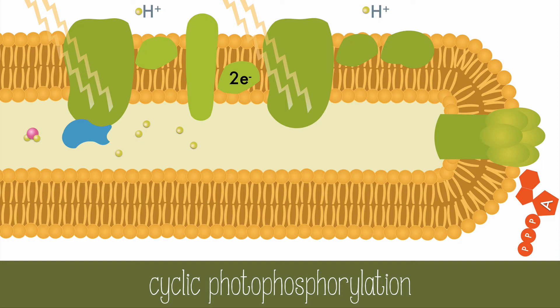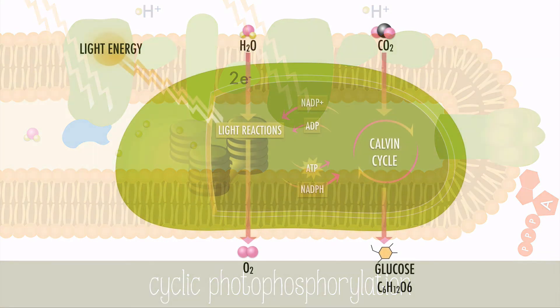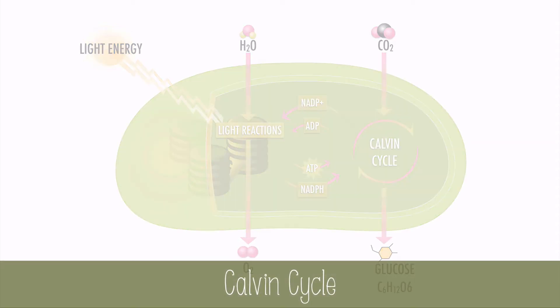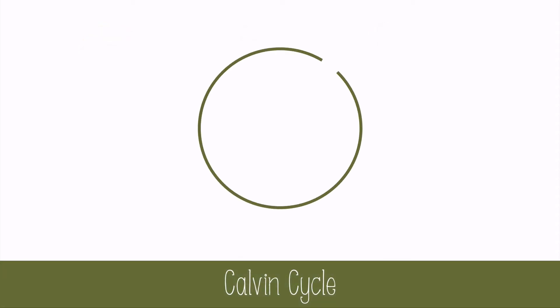Now the ATP and NADPH produced from the light reactions can be used to power the light-independent reactions of the Calvin cycle. The Calvin cycle occurs in the stroma, which fills the spaces of the chloroplast — this is where the molecule building actually occurs. The Calvin cycle is also known as the light-independent reaction because light is not directly used in this process.